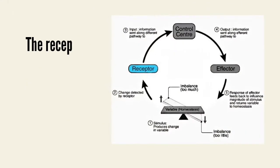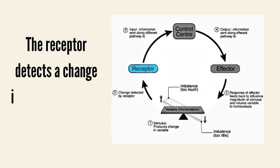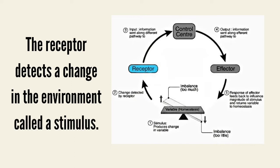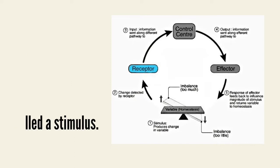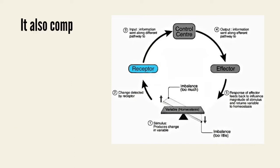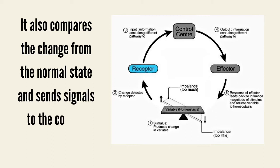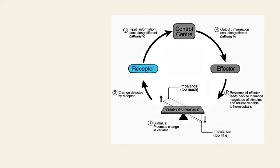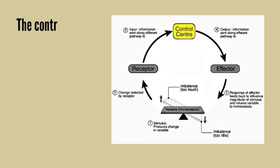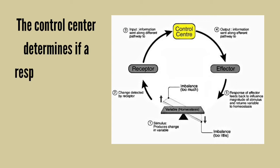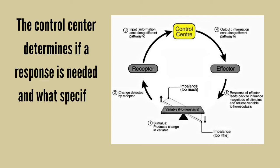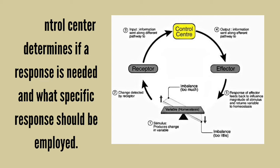The receptor detects a change in the environment called a stimulus. It also compares the change from the normal state and sends signals to the control center. The control center determines if a response is needed and what specific response should be employed.